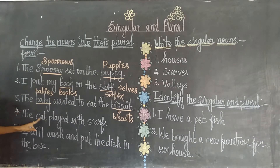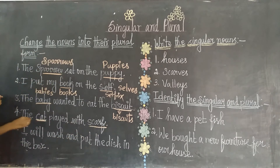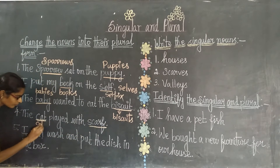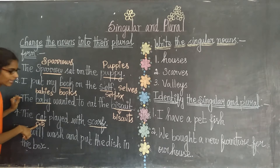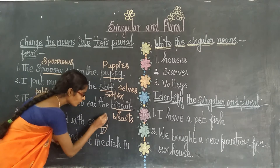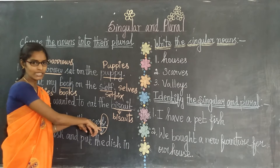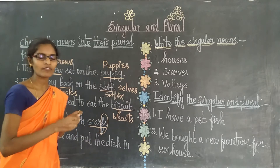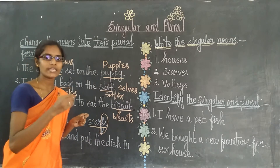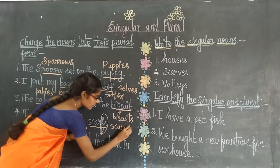The fourth example: 'The cat played with the scarf.' Cat and scarf are the two nouns. The plural for cat is cats. Likewise, the plural for scarf is scarves. Here also, the noun ends in F, so the condition is: instead of F, we add VES — giving us scarves.